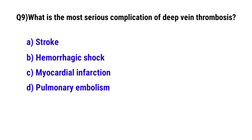Question No. 9: What is the most serious complication of deep vein thrombosis? The correct option is D: pulmonary embolism.